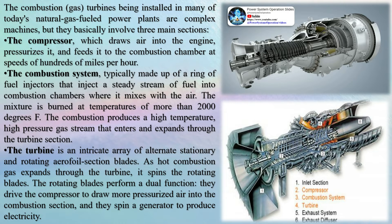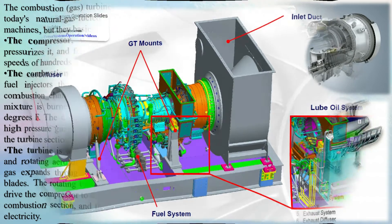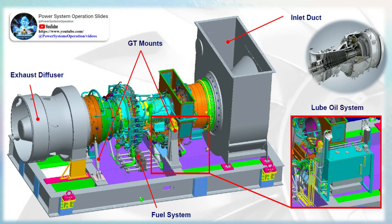Land-based gas turbines are of two types: heavy-frame engines and aeroderivative engines. Heavy-frame engines are characterized by lower pressure ratios — typically below 20 — and tend to be physically large. Pressure ratio is the ratio of the compressor discharge pressure to the inlet air pressure. Aeroderivative engines are derived from jet engines and operate at very high compression ratios, typically in excess of 30.